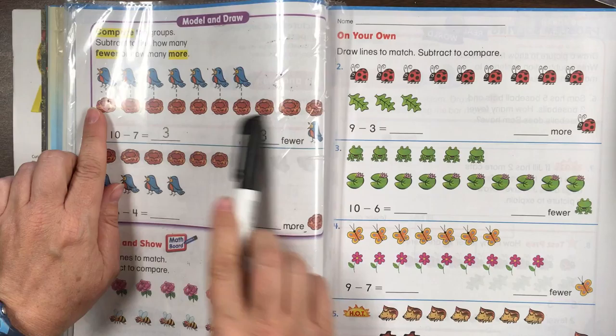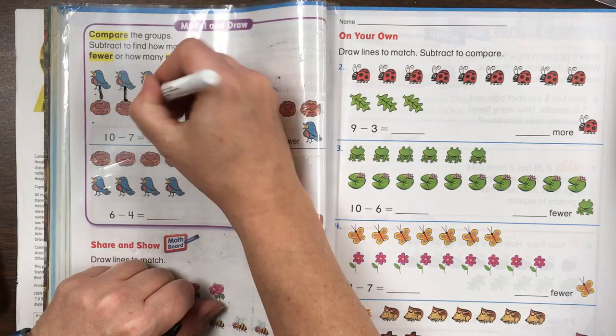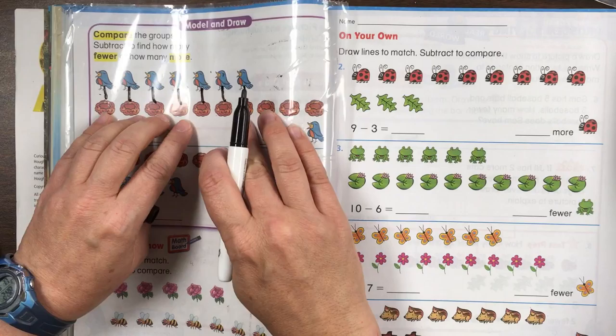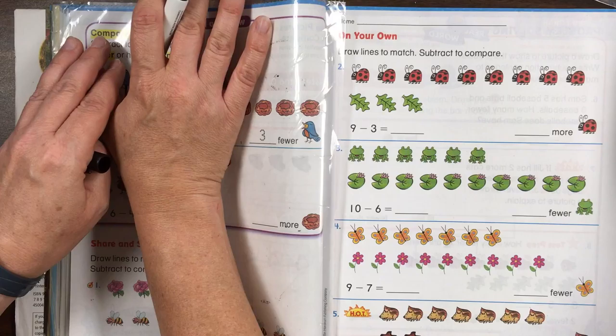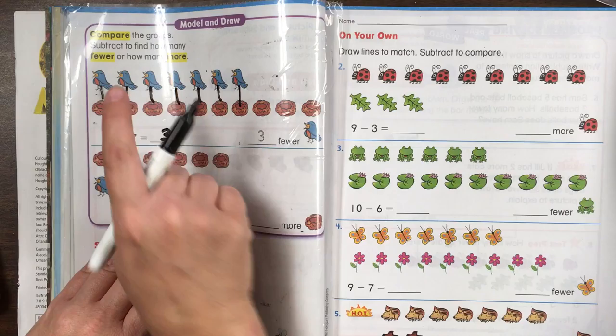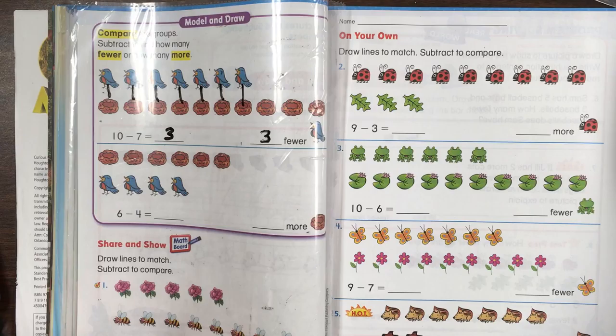So we have some birds and we have some nests. There are ten nests and seven birds. And they connected each bird to a nest until they ran out of birds. Ten nests minus seven birds. So ignoring all the ones that have birds leaves us how many left? Three. There are three fewer birds than nests.